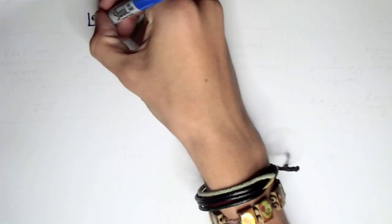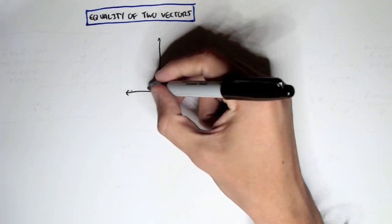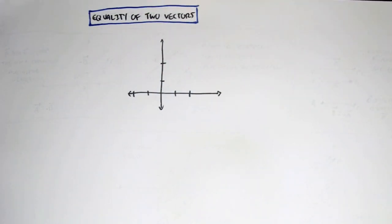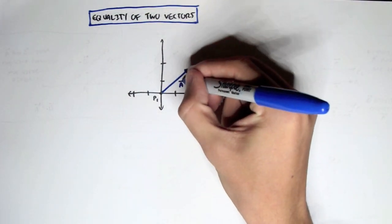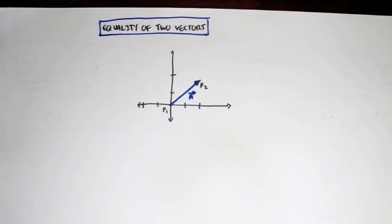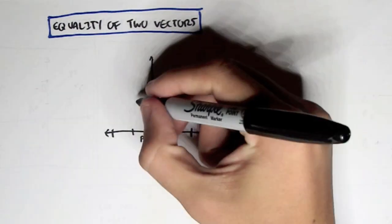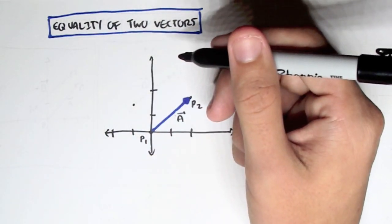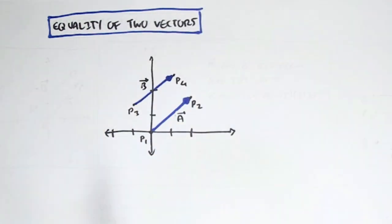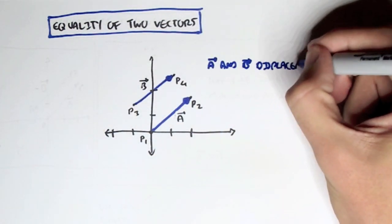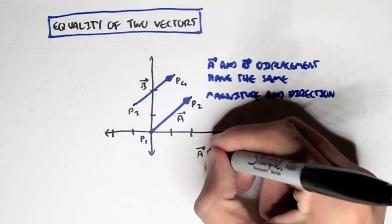Next, let's talk about equality of two vectors. I'll draw the x and y axis here. Let's say point 1 is at the origin and point 2 is where the vector a (with arrow) is travelling to. We have another displacement, b, from 3,3 to 0,4. We can say that displacements a and b have the same magnitude and the same direction, so we can write a displacement equals b displacement.